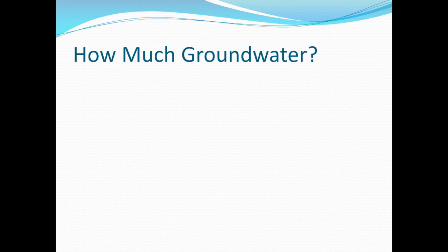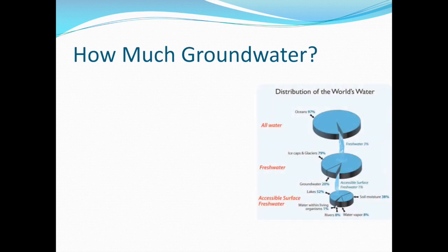How much groundwater do you think there is? Make a guess. Now consider this: of all the water on Earth, only 3% is freshwater. And of that 3%, 20% is groundwater. That means 0.006% of Earth's water is groundwater.